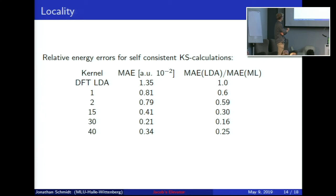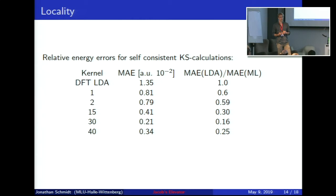For self-consistent calculations the picture is a little different. The ground truth is the exact calculation, and we compare the mean absolute error relative to LDA — in 1D only LDA was available. Even our own neural network LDA is quite a lot better, most likely because we are not trying to reproduce the exchange-correlation energy for a given density as a standard LDA does, but rather fitting the total exchange-correlation energy of the system, where some overfitting may also play a role.